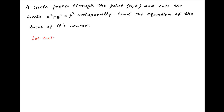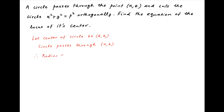Let's assume that the center of the desired circle is (h, k). We are given that the circle passes through the point (a, b). Therefore the radius of the circle is equal to the distance between the points (h, k) and (a, b), which is equal to the square root of (h minus a) whole square plus (k minus b) whole square.